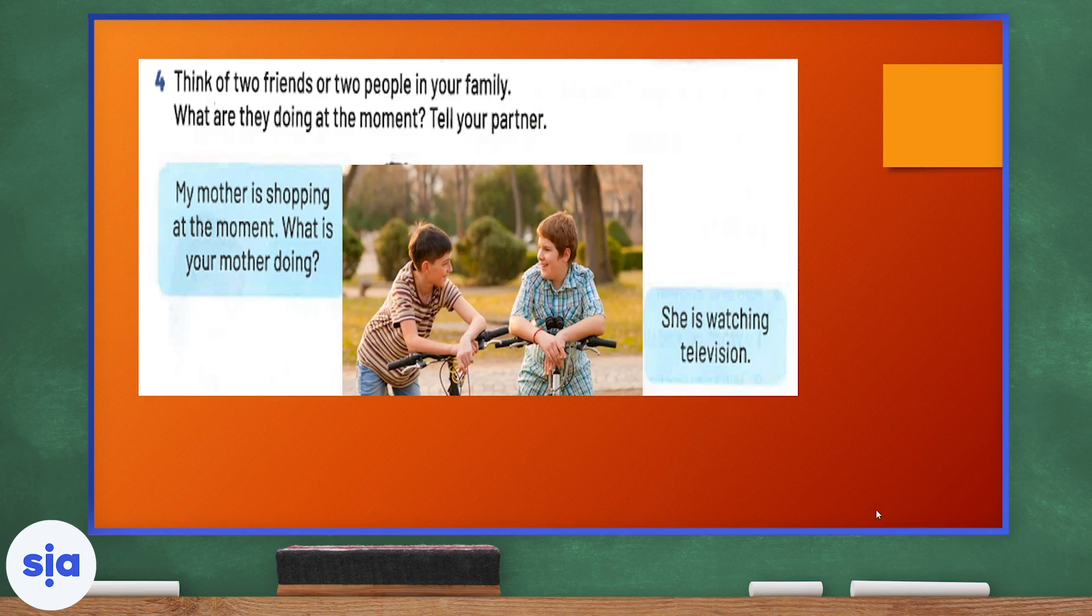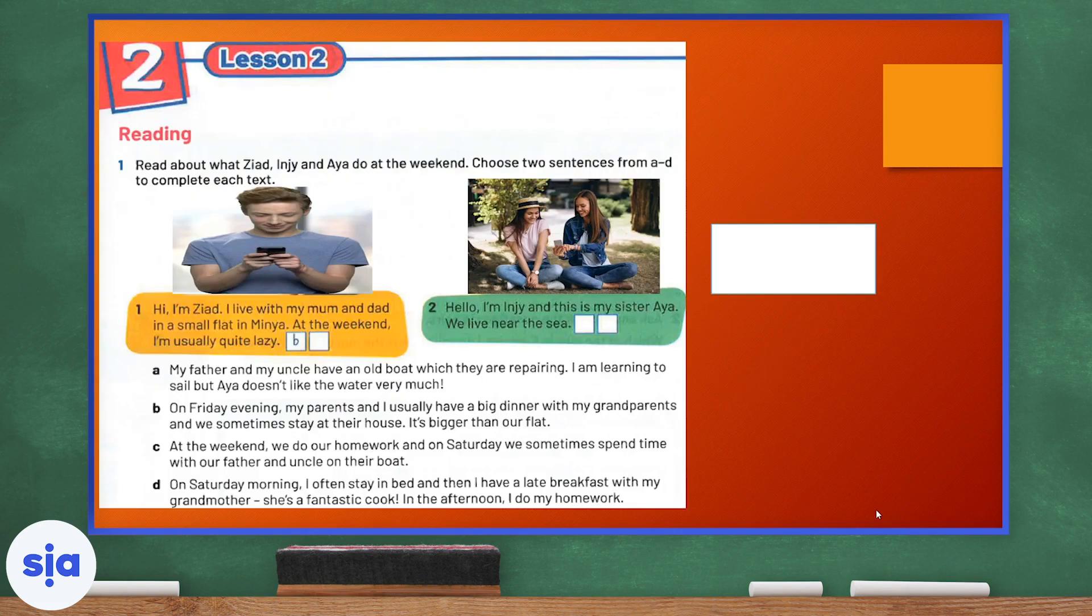Now, I want you to think of two friends or two people in your family. What are they doing at the moment? Tell your partner. Let's read the examples. My mother is shopping at the moment. What is your mother doing? She's watching TV.